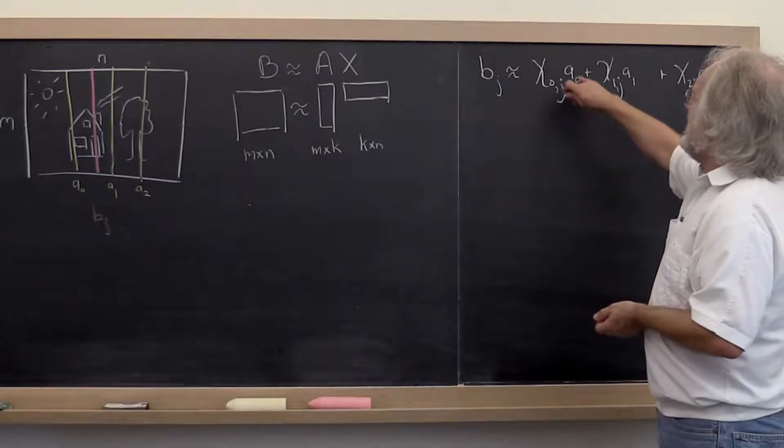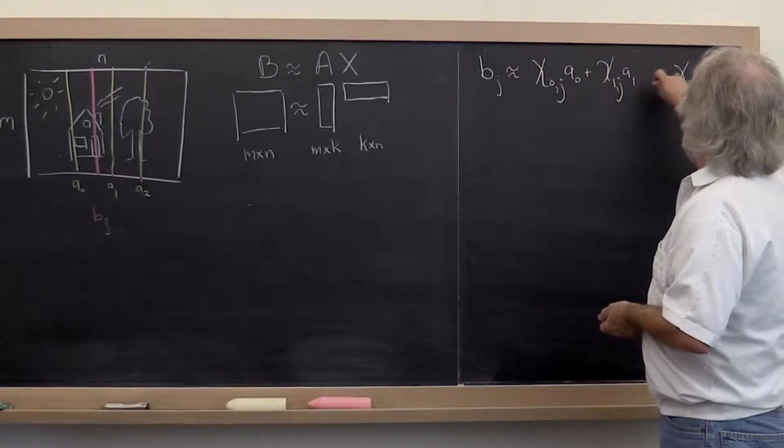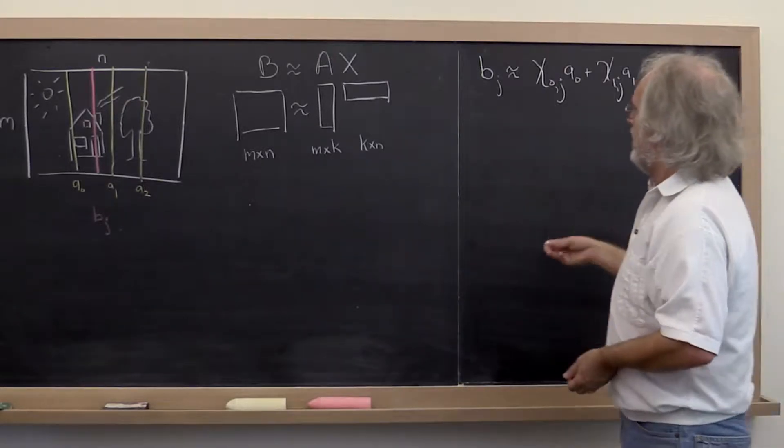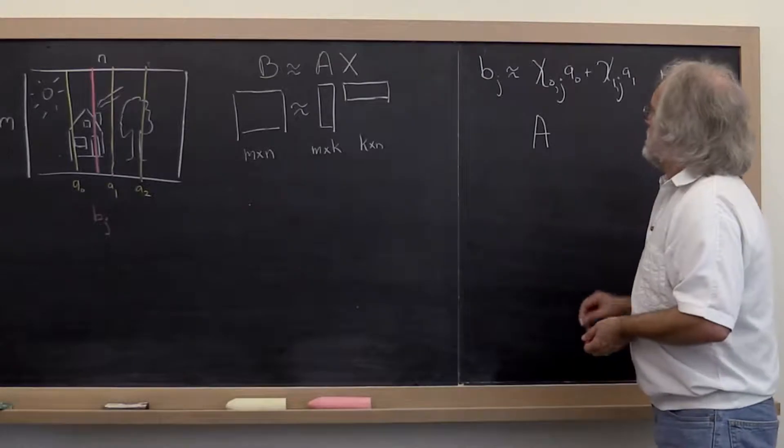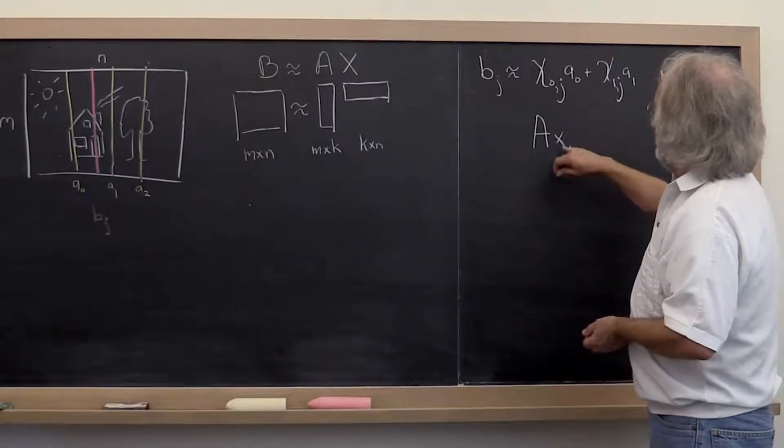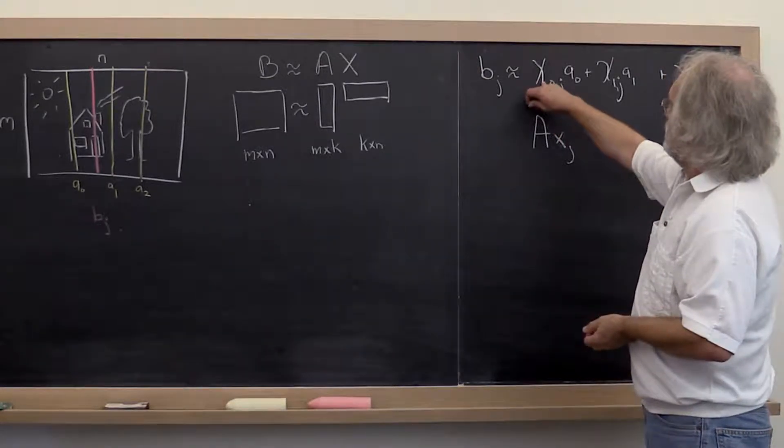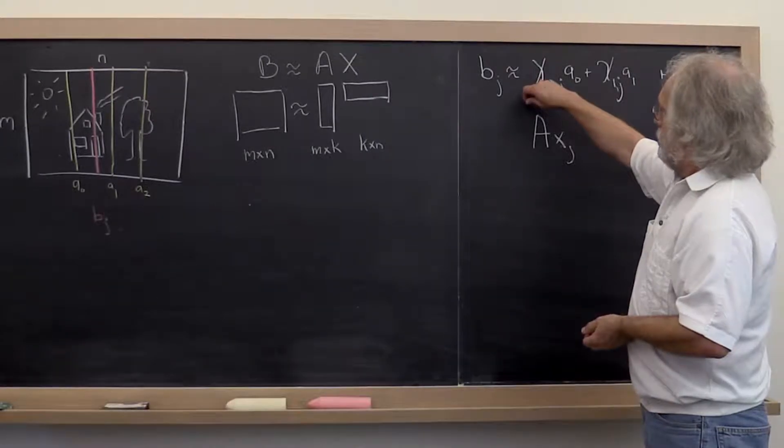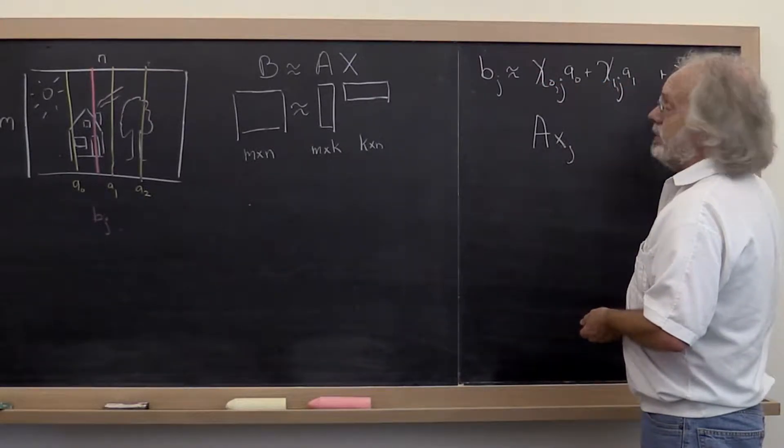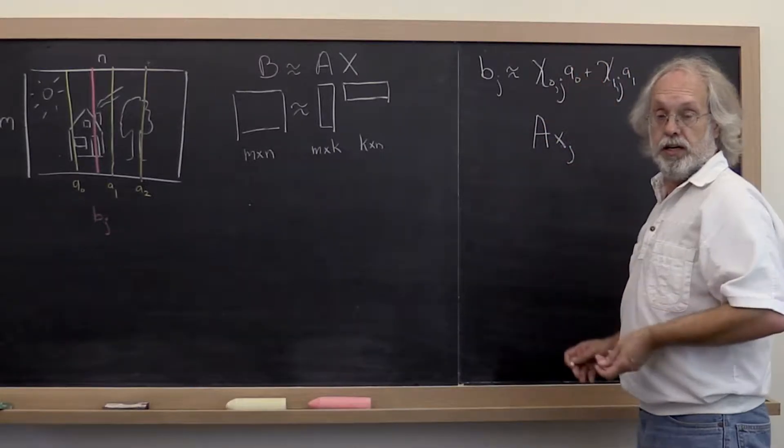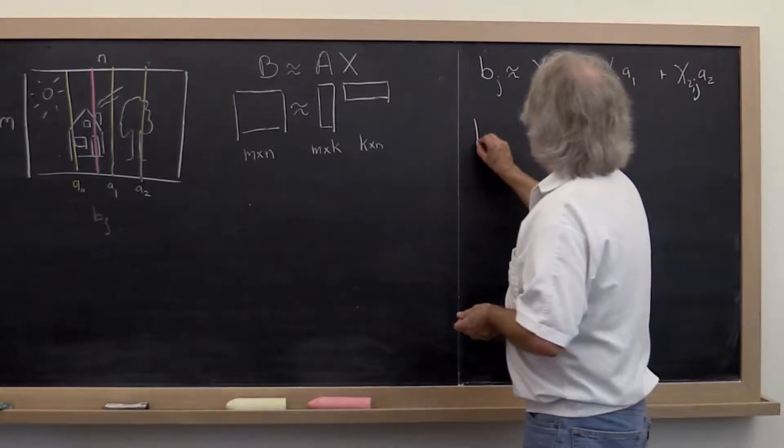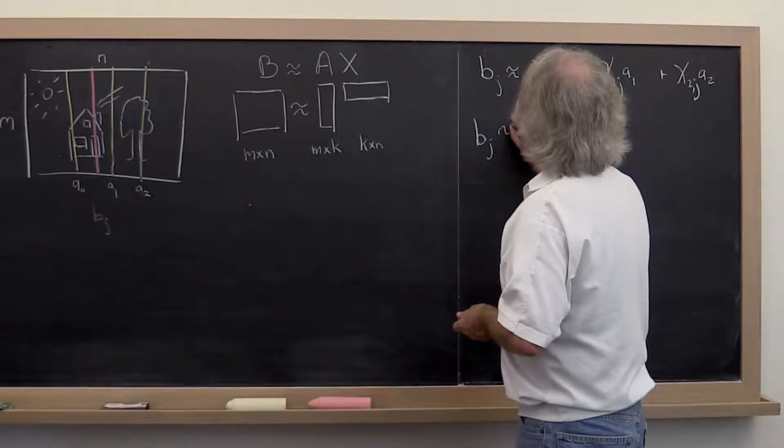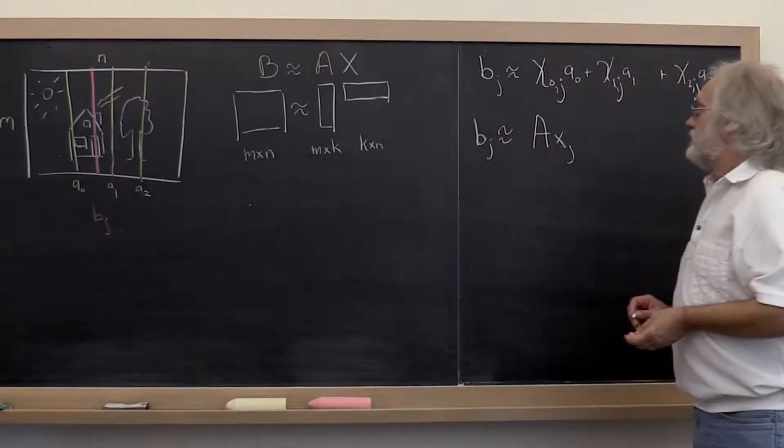Now we said let's take A0, A1, A2 to be the columns of A. So we can also think of this as A times Xj, where Xj is now the vector with entries chi0j, chi1j, chi2j, or in the more general case with K entries like that. So what we're saying is that Bj is approximately A times Xj.